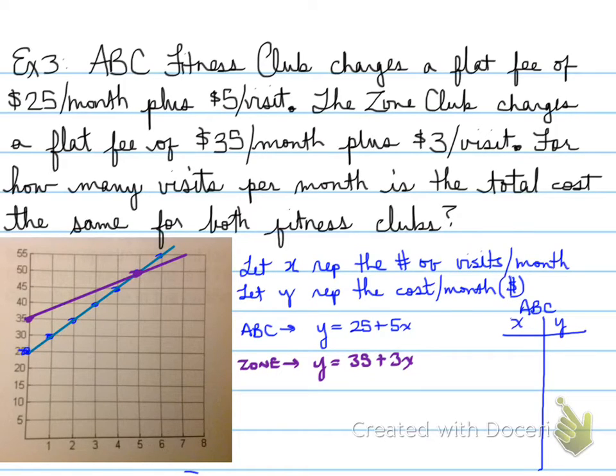Well, how does that help us? Well, let's look at the table of values to compare. When I look at ABC, I get the value, if I go no times in the month, I get $25. I go once a month, I have to pay $30, and so on, right up until six times a month, you're paying $55.